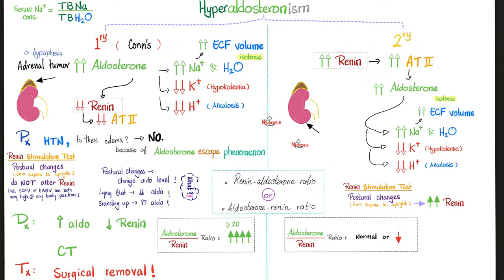In secondary hyperaldosteronism, the problem started elsewhere — hypotension or a kidney tumor secreting excess renin. Renin rises first, then angiotensin 2, then aldosterone. To tell the difference, you can measure the aldosterone-to-renin ratio. In primary hyperaldosteronism, aldosterone is high and renin is low, so the ratio is very high — greater than 20. In secondary hyperaldosteronism, both renin and aldosterone are high, so the ratio is normal or slightly decreased, because renin rose more than aldosterone.